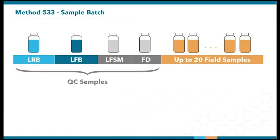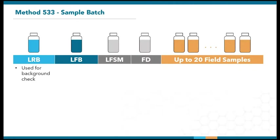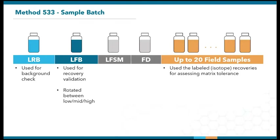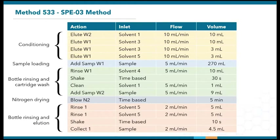Their positions are rotated on the automated and manual systems between each extraction batch. The lab reagent blank (LRB) is used to assess system background. It is free of the target analytes and only contains the 19 labeled compounds of the method. The lab fortified blanks (LFBs) contain both the 25 analytes and 19 labeled compounds spiked at low, mid, and high concentrations. This allows us to measure recoveries and reproducibility. Between each extraction on the SPE03, a 15-minute automatic cleaning cycle is run to remove carryover.